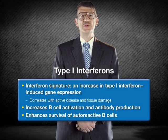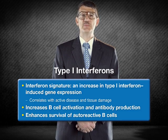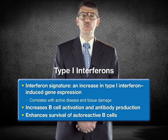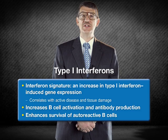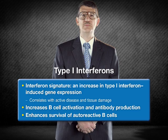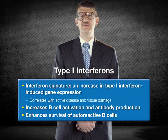Cytokines of particular interest include type 1 interferons, interleukin-6 or IL-6, and B cell activating factor, or BAFF. Patients with lupus display a so-called interferon signature — that is, an increase in expression of genes activated by type 1 interferons. The interferon signature, which correlates with active disease and increased tissue damage, has been noted in glomerular and synovial tissue, suggesting a role in localized disease manifestations. Interferons can promote B cell activation and antibody production, while potentially enhancing the survival of autoreactive B cells.